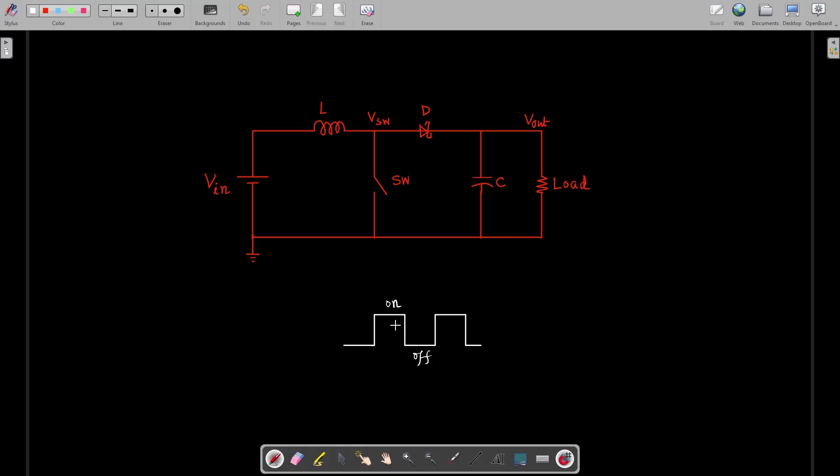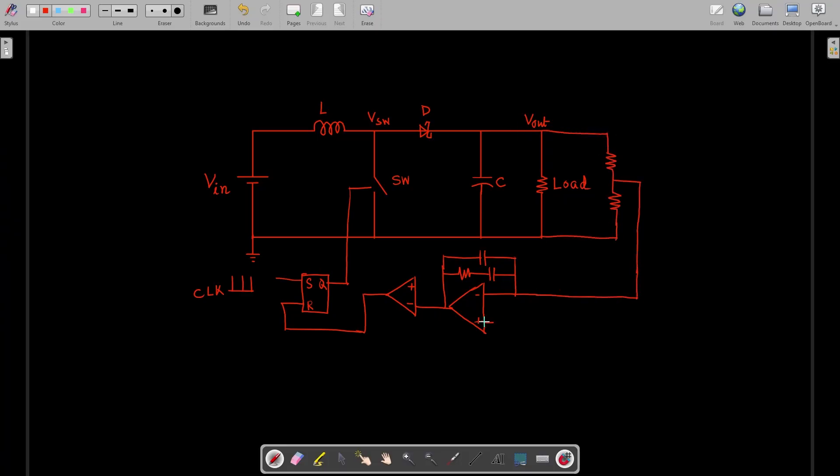To do that we generate a PWM signal and control its duty cycle by an error amplifier. Now we'll move towards the actual circuit implementation. For this project I have selected the fixed frequency peak current mode control. I know these words might sound like alien words to them who barely have any idea about DC-DC converter and its different control techniques, but for them I would suggest just to bear with me and you will get an idea, at least just enough to design your first boost converter.